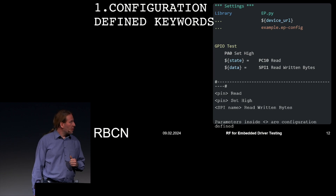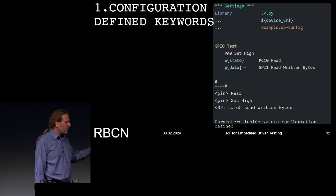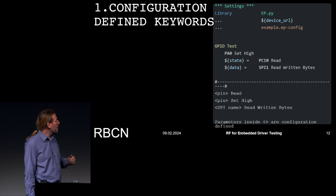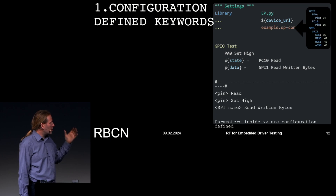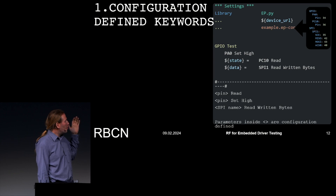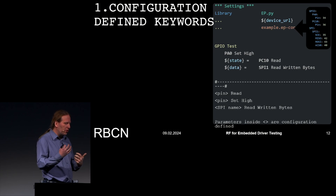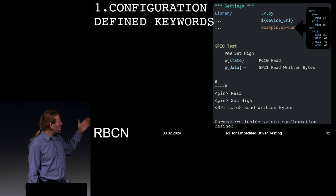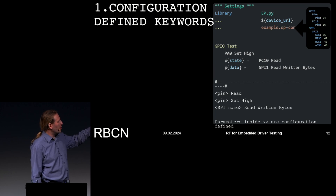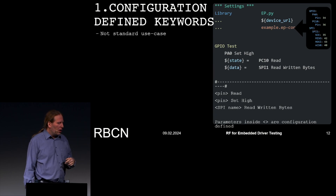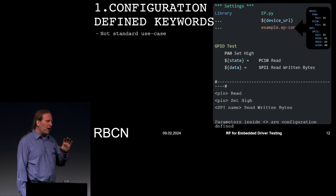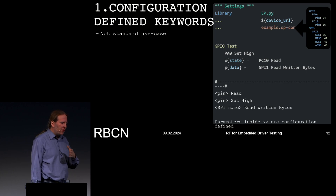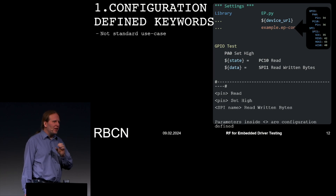Our configuration defines keywords. As you can see, we have our library called EP — Execution Platform — with a URL for the device because it connects over Ethernet, and a configuration file. The configuration could look like this YAML file, where pins and SPI communication interfaces are defined. Based on this configuration, in the test case there is a keyword like 'measure PA0 set high' — the PA0 comes from the configuration, so we generate it on the fly. This wasn't the standard use case for Robot Framework, but there is a dynamic library interface that works.